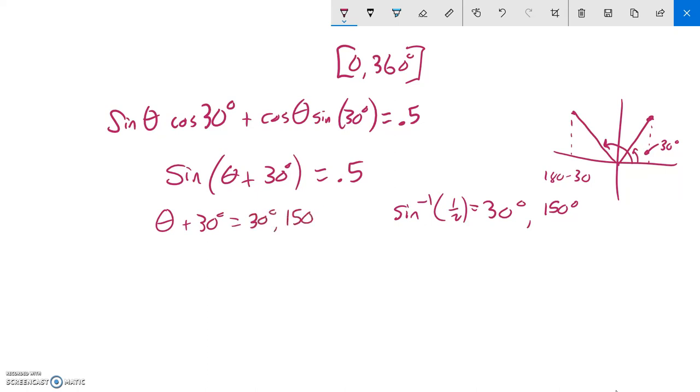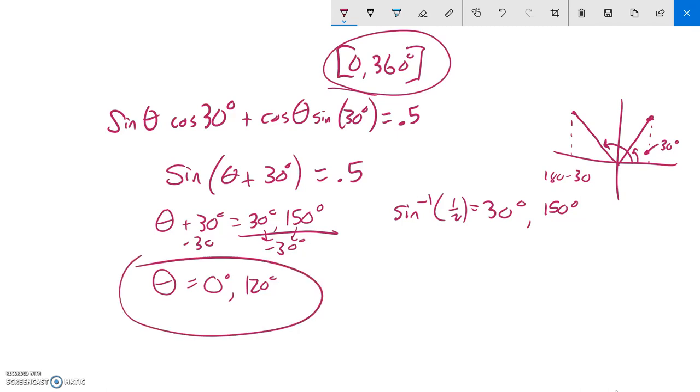So now I'm going to subtract 30 from both sides. If I do that, 30 minus 30 is 0, 150 minus 30 is 120. My period is 360, so if I start adding 360 to this, it's going to kick me out of that. So here's my answer.